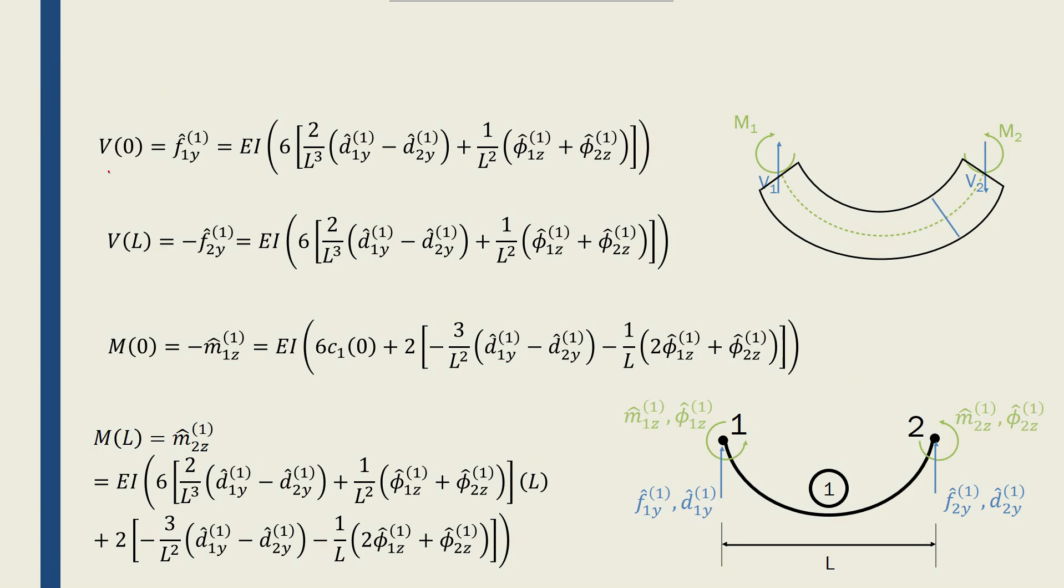So at x equals 0, V(0) is equal to f1y, and it's equal to EI times 6c1. Or basically, just 6c1 that we found from this equation.